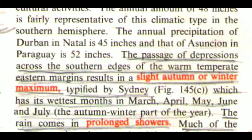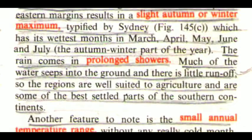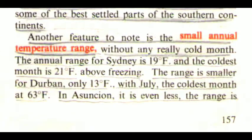The passage of depressions across the southern edges of the warm temperate eastern margins results in a slight autumn or winter maximum typified by Sydney, which has its wettest months in March, April, May, June and July — the autumn-winter part of the year. The rain comes in prolonged showers. Much of the water seeps into the ground and there is little runoff, so the regions are well suited to agriculture and are some of the best settled parts of the southern continent. Another feature to note is the small annual temperature range. Without any really cold month, the annual range for Sydney is 19°F and the coldest month is 21°F above freezing.